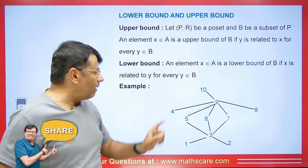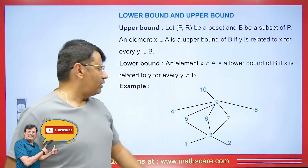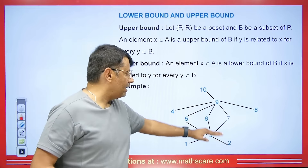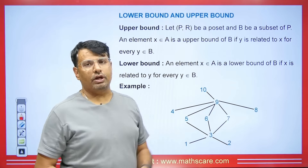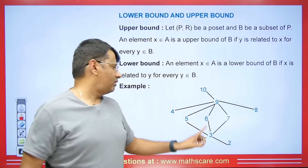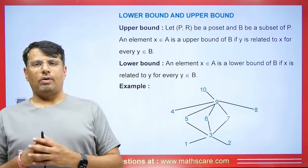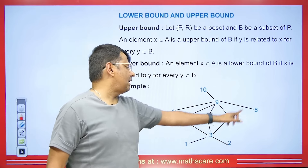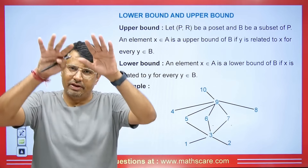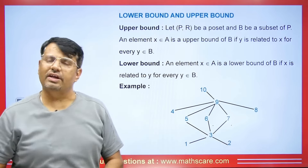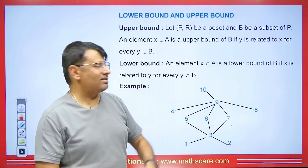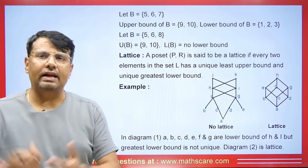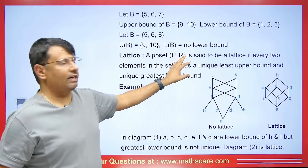Now lower bound: an element X in P is the lower bound of B if X relates to Y for every Y in B. The lower bound of 5, 6, and 7 will be 3, 2, and 1 — three lower bounds. They are all below it and relating to it. If asked the greatest lower bound, the biggest among 1, 2, and 3 is 3. So 3 will be the greatest lower bound. If we have 10, then everything below it will be our lower bound.